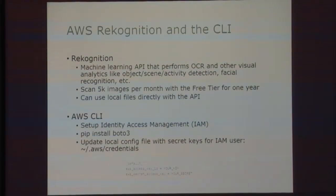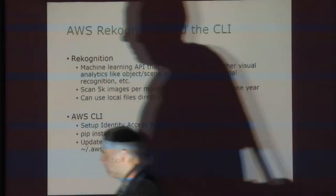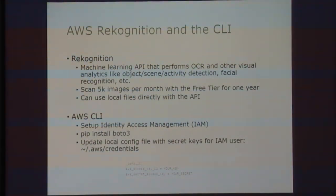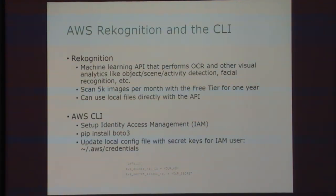You don't have to store things in the cloud or upload to S3 buckets — you can do it directly with local files and just hit the API. To get set up with AWS, it's actually very simple. You just have to set up Identity Access Management once you get an account going, install Boto3, and then enable a local credentials file on your machine to call the API.